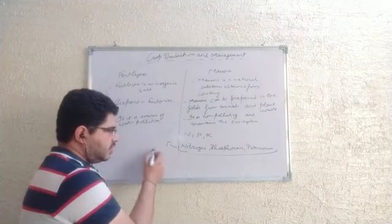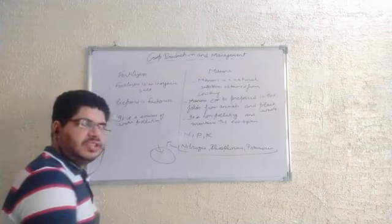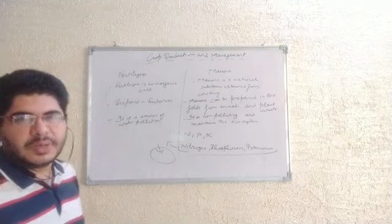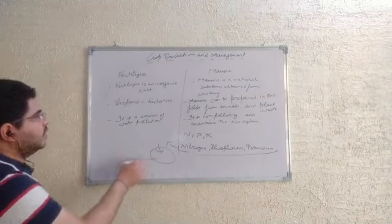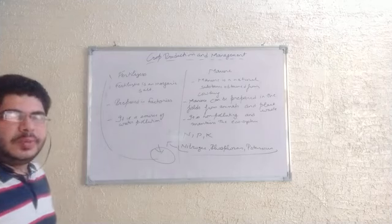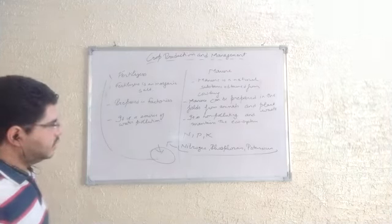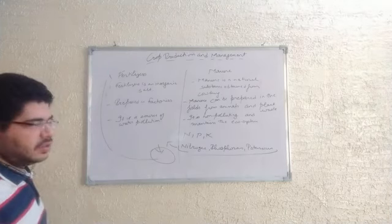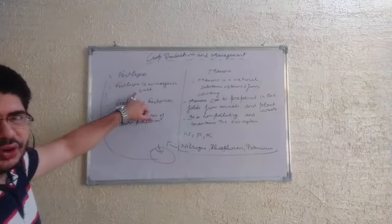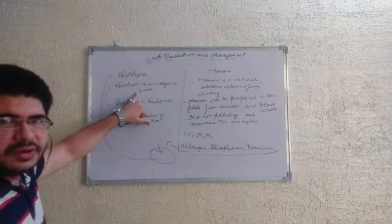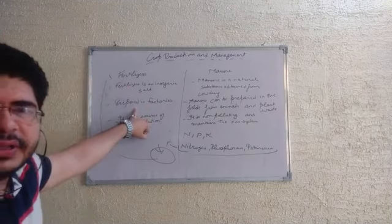Fertilizer is a substance that is rich in nitrogen, phosphorus, and potassium — meaning it contains these nutrients in high quantity. Because it comes in packages and contains nitrogen, phosphorus, and potassium, it is called an inorganic salt and it is prepared in the factory.